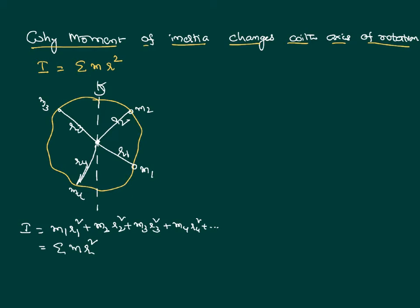Now suppose you have the same body and all of a sudden you have changed the axis of rotation. First axis of rotation is this one. Now the new axis of rotation is this one. So what happens when axis of rotation changes?